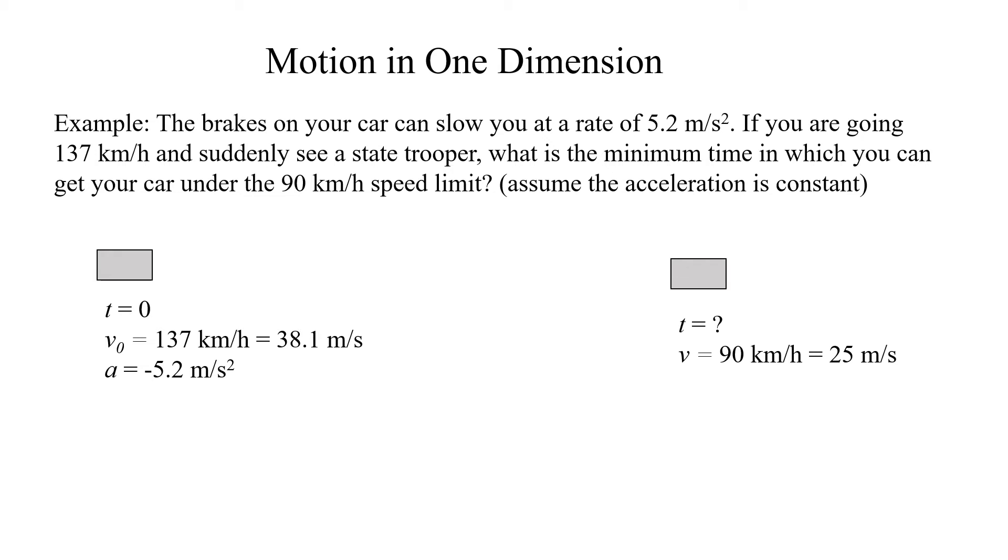All right, so we're going to brake until we slow down to 90 kilometers per hour. So I draw that over on the right side. I want to find out what that time is. So I write a question mark for the t. And I know the velocity there is going to be 90 kilometers per hour. And that converts to 25 meters per second. All right, so now I've got my problem set up. We want to find the t.